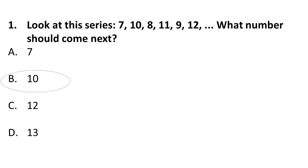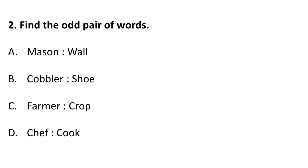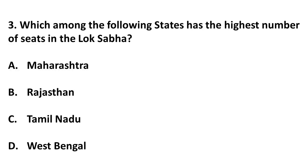Moving on to the next question: find the odd pair from the following. The pairs are — mason builds a wall, cobbler stitches shoe, farmer grows crop, and chef cooks. This last one is odd because a chef cooks food, so the pair should have been chef and food, not chef and cook. The correct answer is chef and cook is the odd pair.